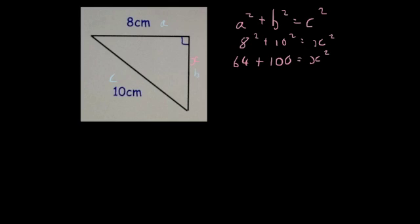64 plus 100 is equal to 164 and that equals X squared. But because this side here isn't 164, we need to get rid of the square. So we're going to square root both sides. The square root of 164 equals X.